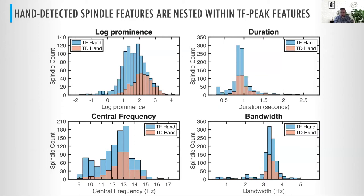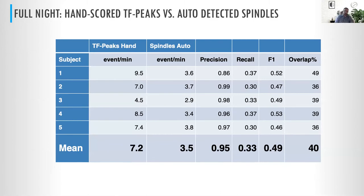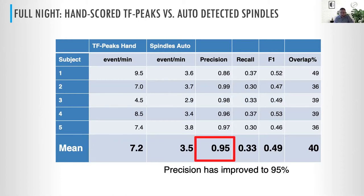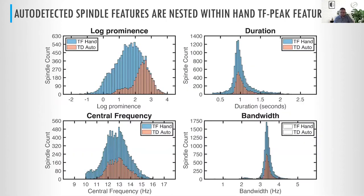We then looked at time-frequency peaks versus auto-detected spindles, using the method from the Wamsley paper, found through other means to be the most accurate at reflecting human-scored spindles. We see it's about two to three times the rate overall, but now our precision has improved: 95% of things detected as spindles were also TF peaks. The distributions for duration, bandwidth, and central frequency look exceptionally similar and are completely nested with those of the TF peaks — we just see a lot more at lower frequencies.